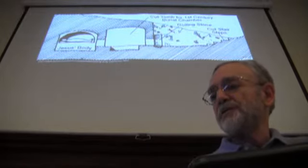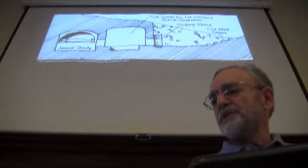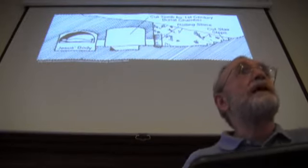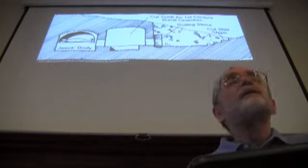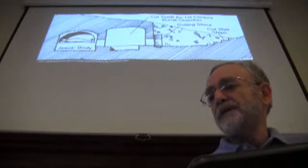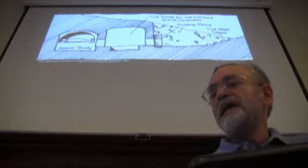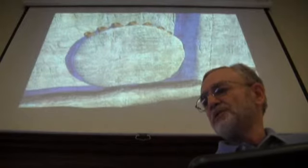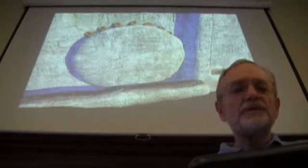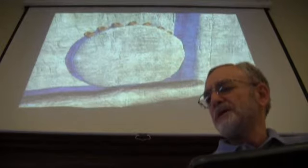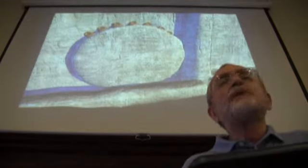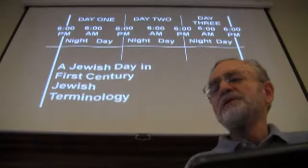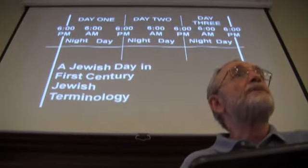Here's an architect's drawing of how they think the tomb looked in the first century, built into a limestone hill with stairs cut down, a rolling stone in front, a forward burial chamber, and the rear chamber where the body was placed. It was a new unused tomb, a very rich man's tomb requiring a lot of stonework. No matter how the tomb was sealed, you could not move the stone without breaking the Roman seal, which carried the penalty of death.